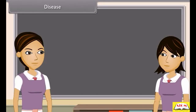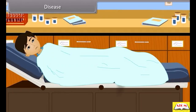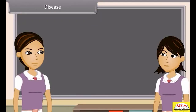Do you know that when we are unhealthy, then we are having one or more diseases? What is disease? I have read that disease means disturbed ease. Yes, scientifically, disease can be defined as a disordered or incorrectly functioning organ, part, structure or system of the body resulting from the effect of genetic or developmental errors, infection, poisons, nutritional deficiency or imbalance, toxicity or unfavorable environmental factors — illness, sickness, ailment.